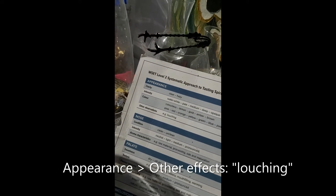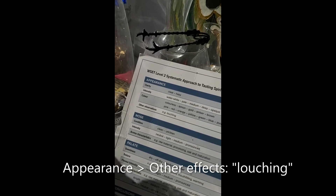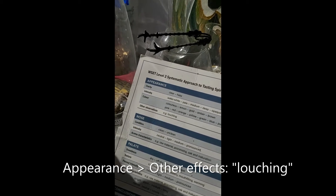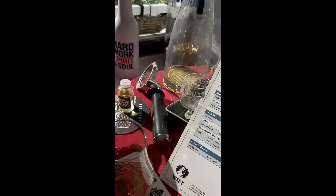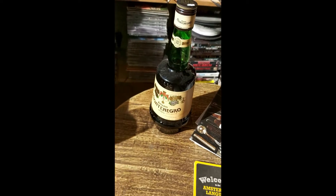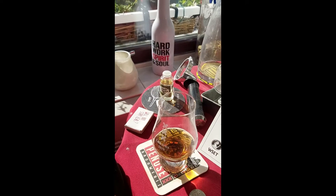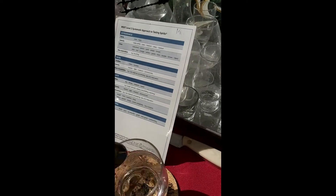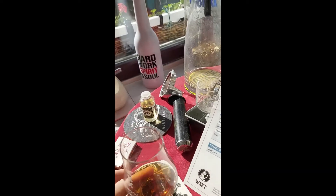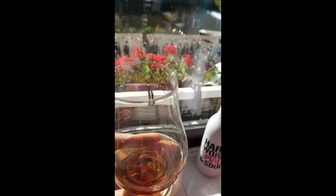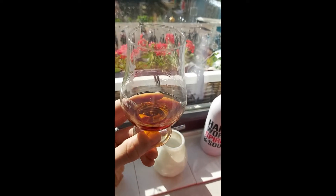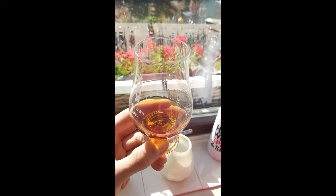Other observations: louching — that's the effect you get when you drop water into a drink that has some anise in it, producing a cloudy effect. Since this is a herbal liqueur, that might be an interesting thing to test. I'll swirl it around and look through the bottom to check for clarity. I can't really see any louching. Louching will really look like a cloud of smoke rising within your drink, which is not the case here at all.